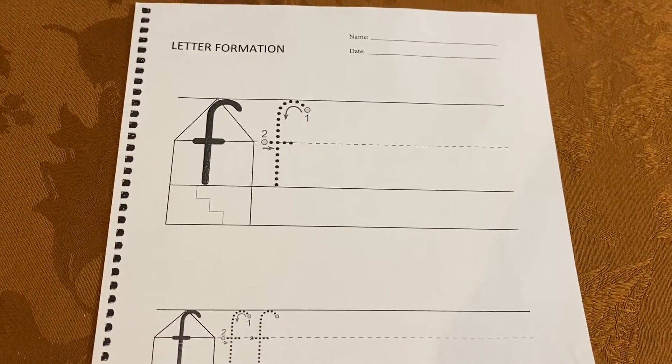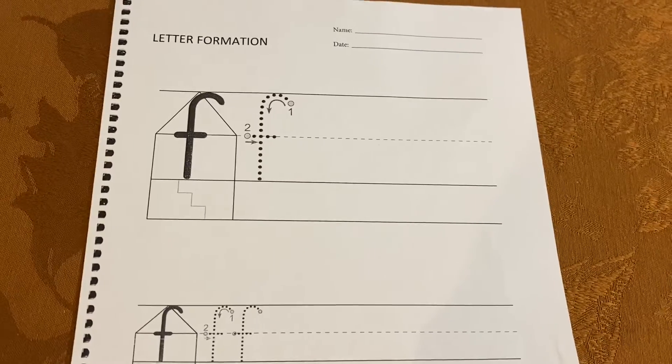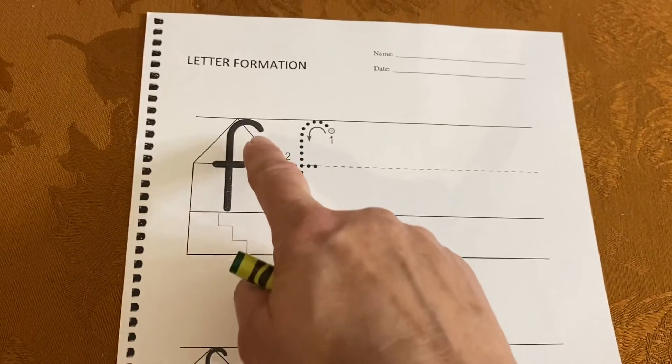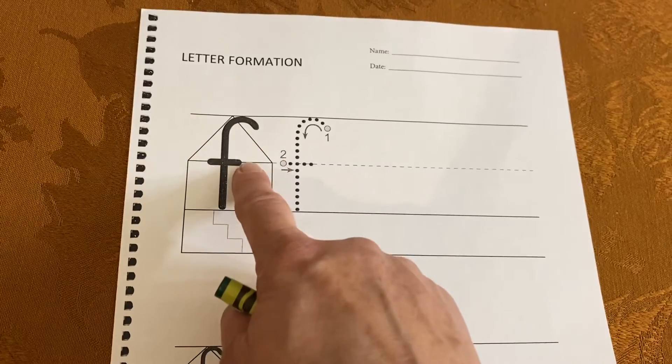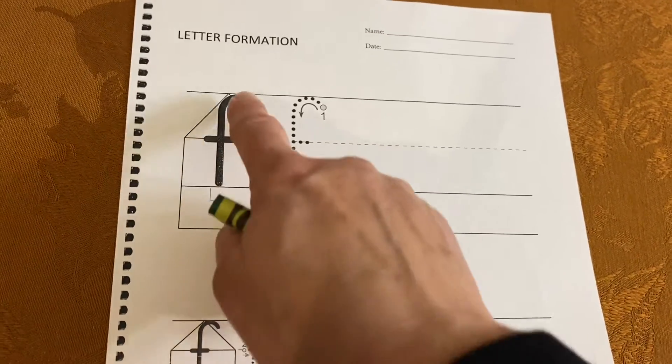Let's practice writing the lowercase f. Notice that it lives in the attic and the main floor, the upstairs and downstairs.